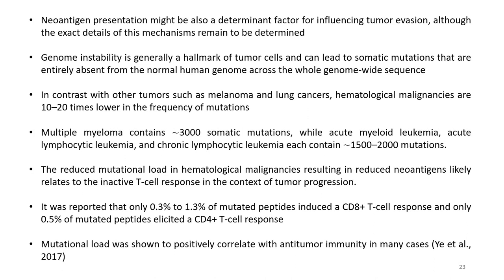Genome instability is a hallmark of tumor cells and can lead to somatic mutations entirely absent from the normal human genome. In contrast with melanoma and lung cancers, hematological malignancies have 10 to 20 times lower frequency of mutations. Multiple myeloma contains about 3000 somatic mutations, while acute myeloid leukemia, acute lymphocytic leukemia, and chronic lymphocytic leukemia each contain about 1500 to 2000 mutations. Only 0.3% to 1.3% of mutated peptides induced a CD8+ T cell response and only 0.5% elicited a CD4+ T cell response.